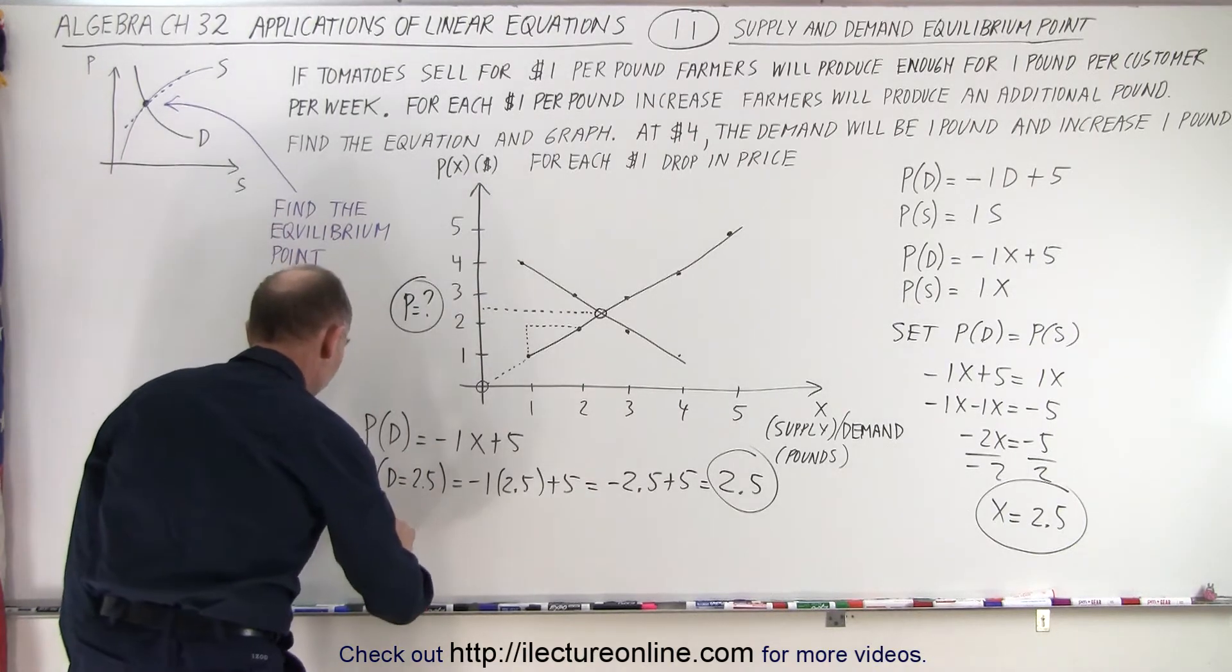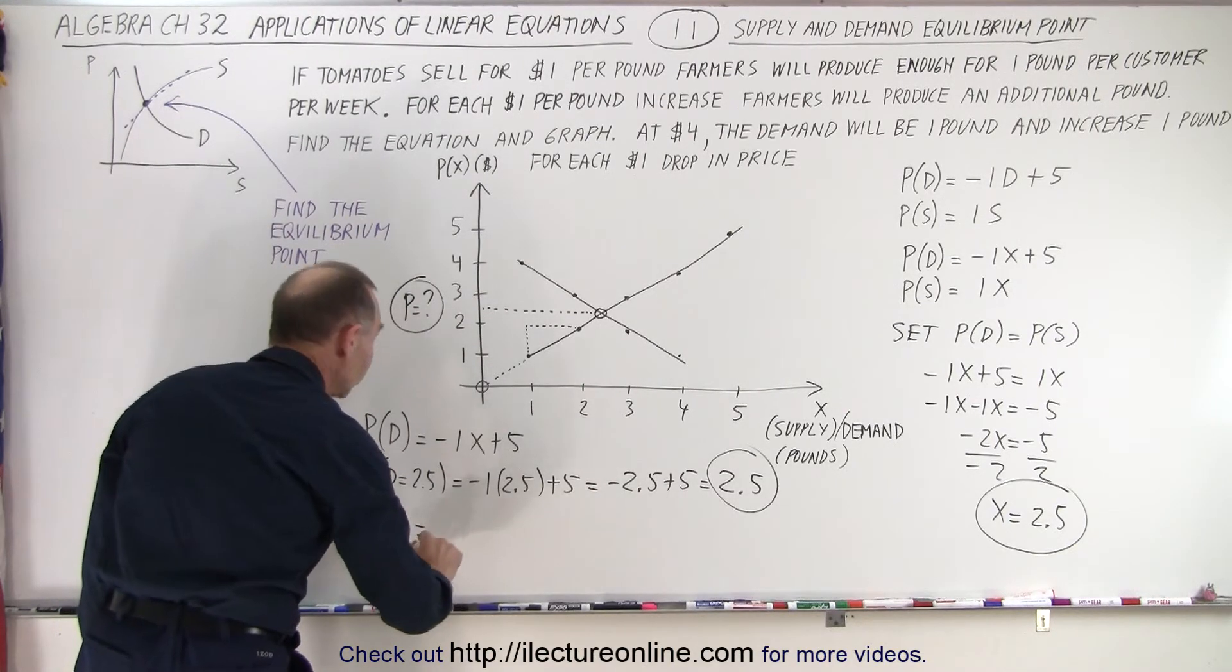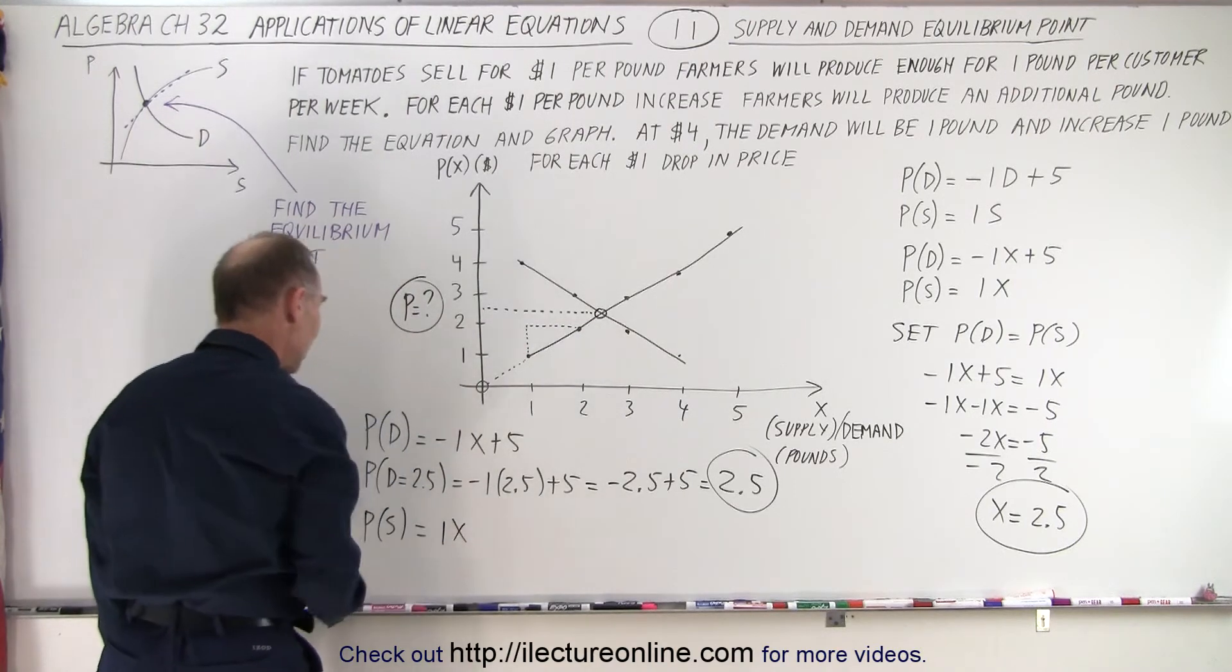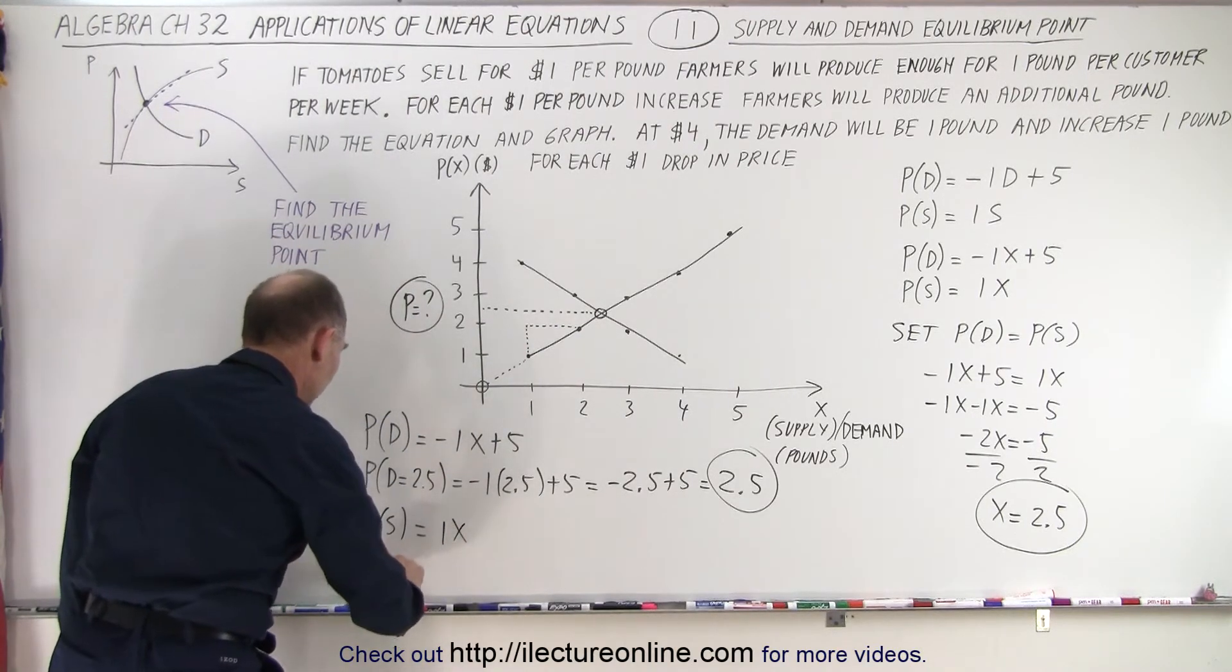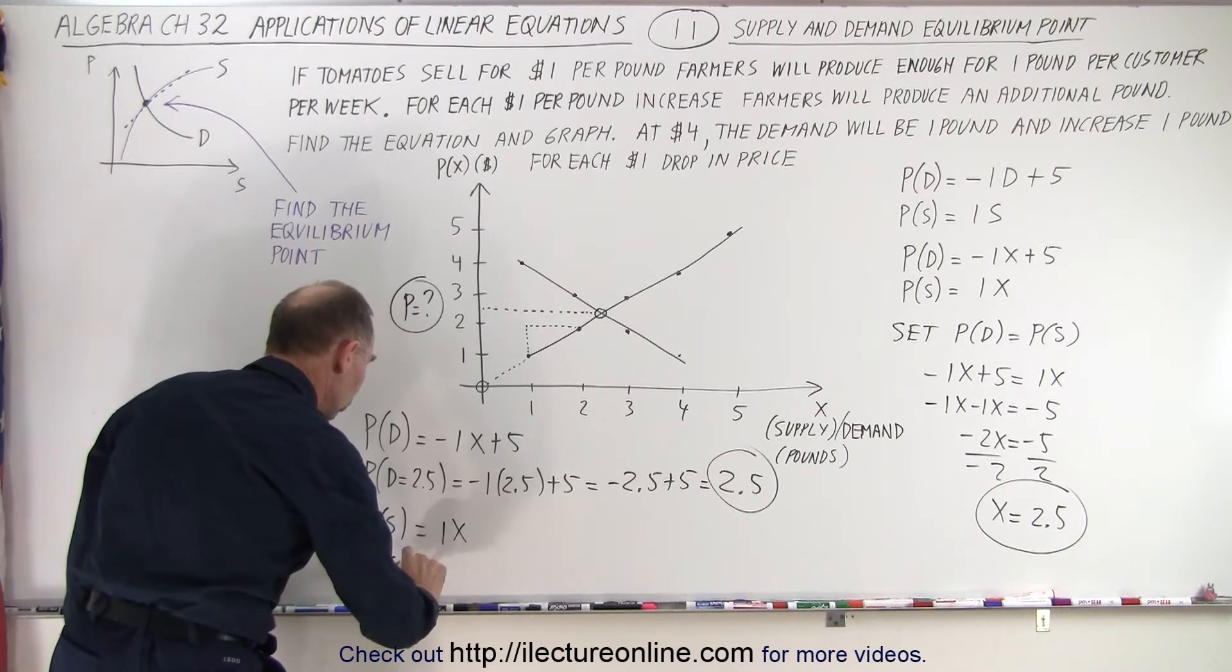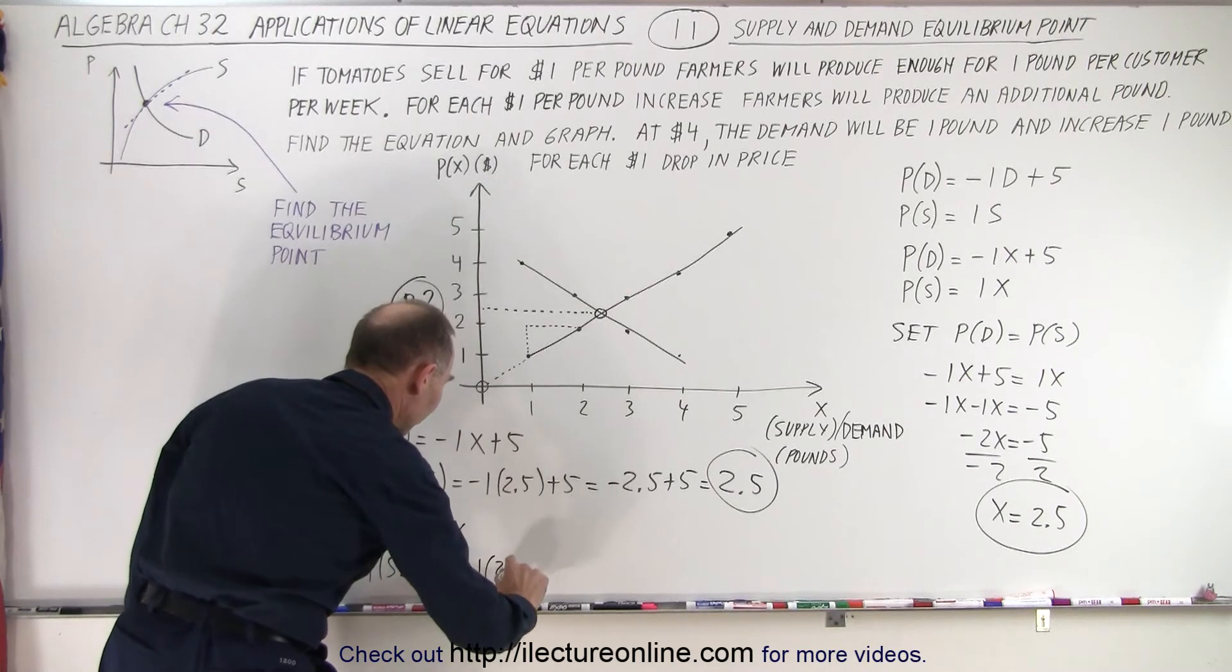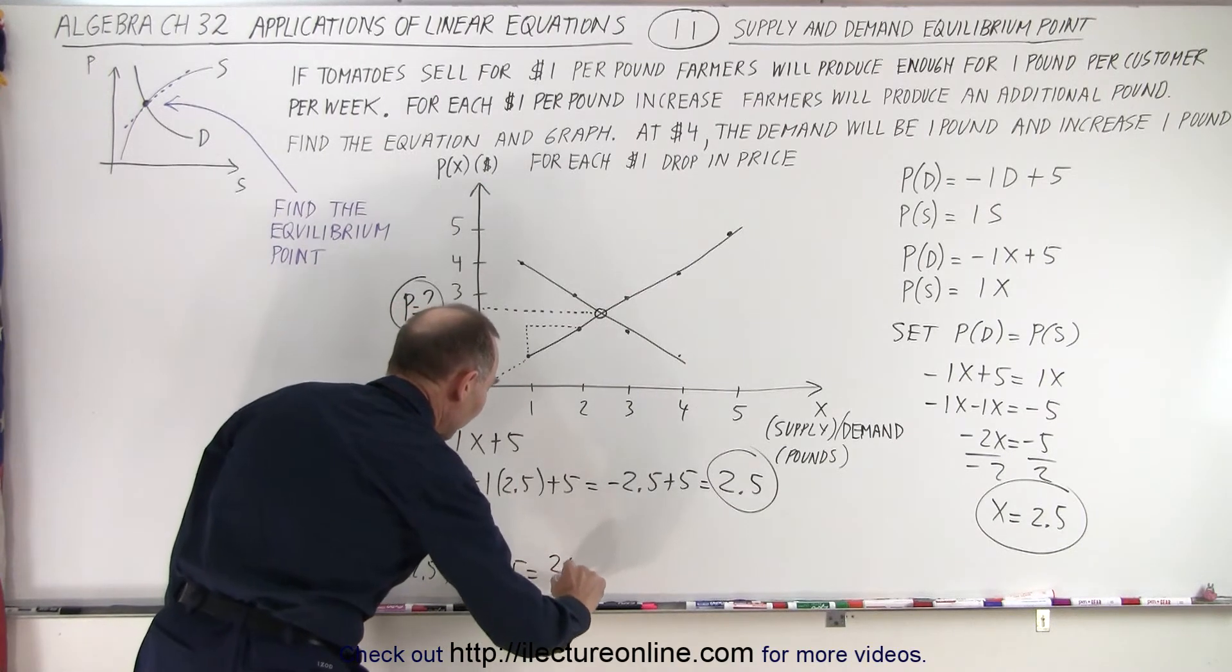Using the other equation, the supply equation, which is equal to 1s or 1x, we can see that the price when the supply is equal to 2.5 is equal to 1 times 2.5, which is equal to 2.5.